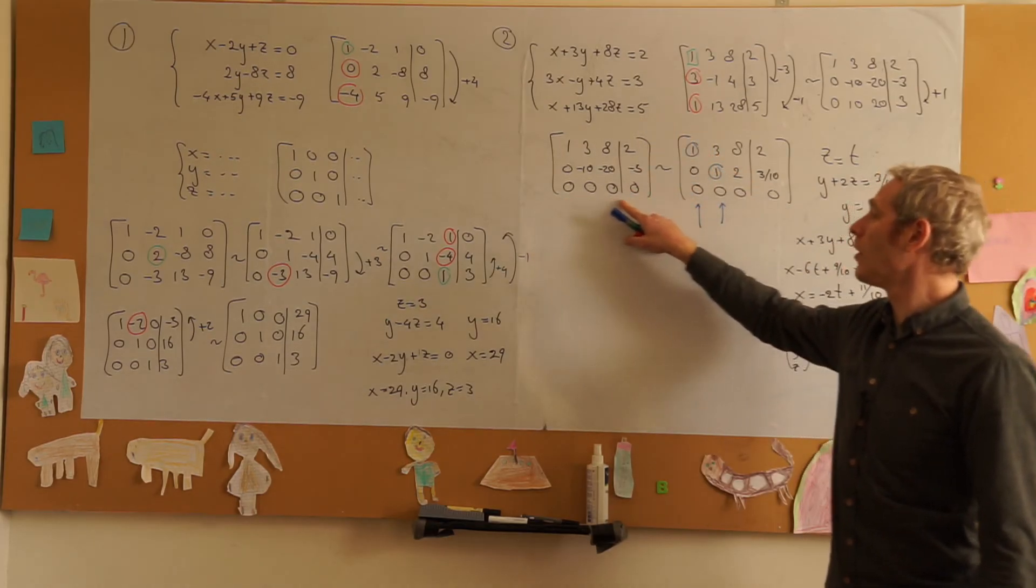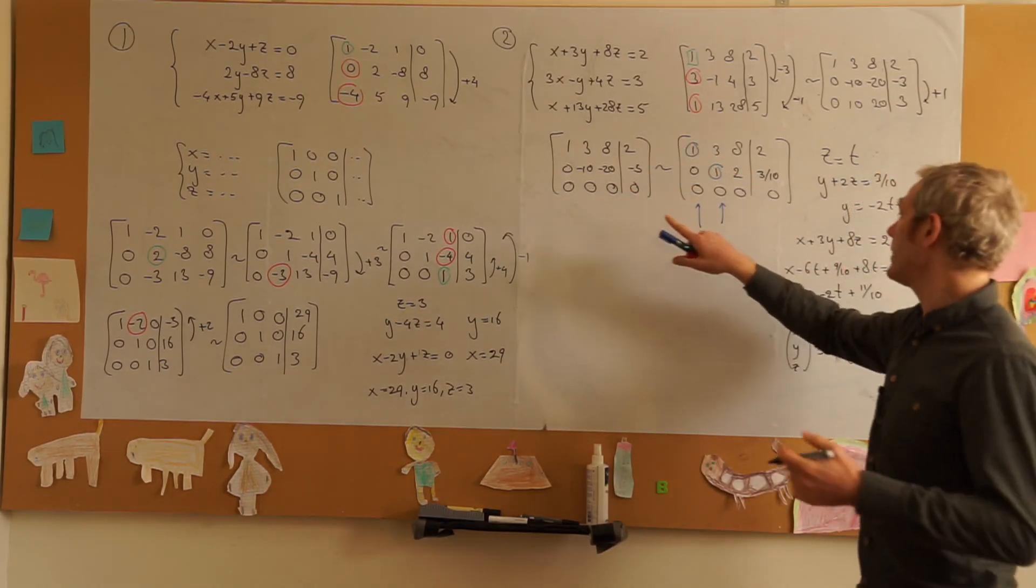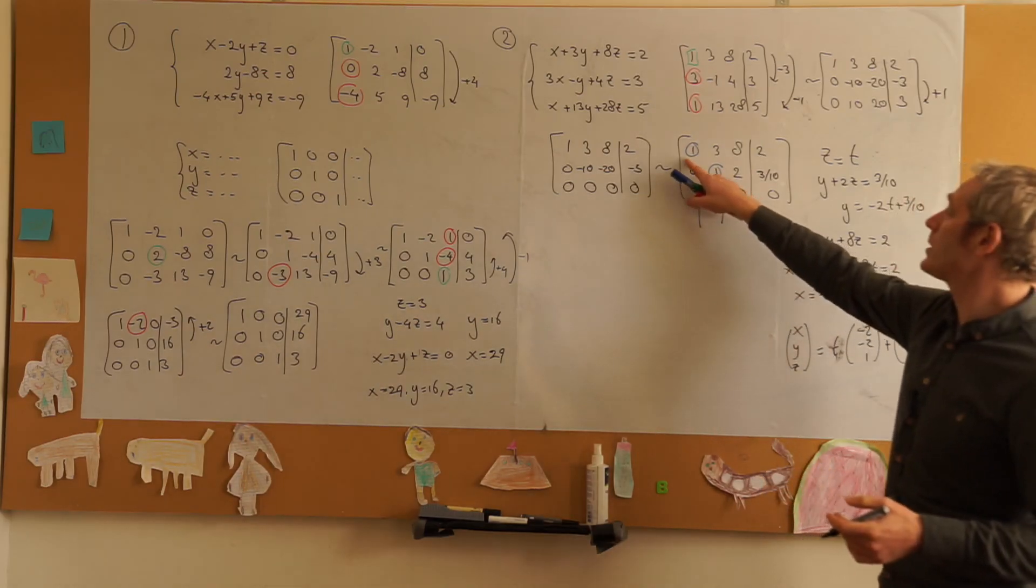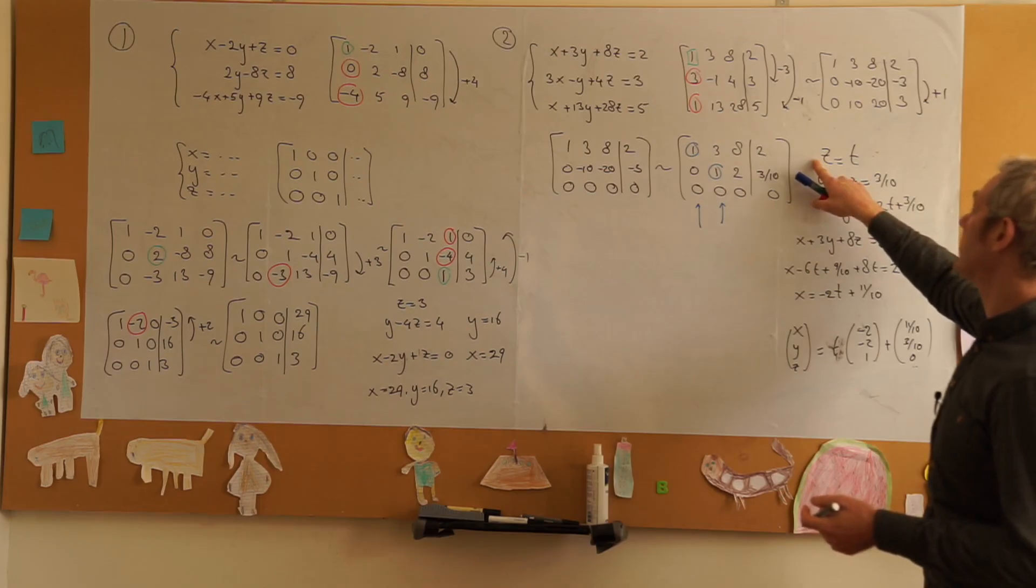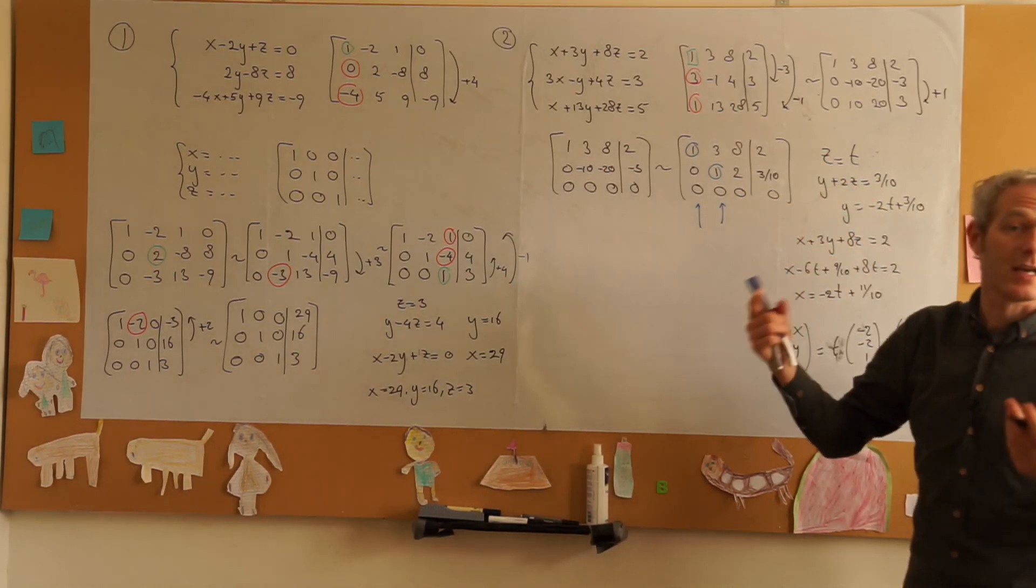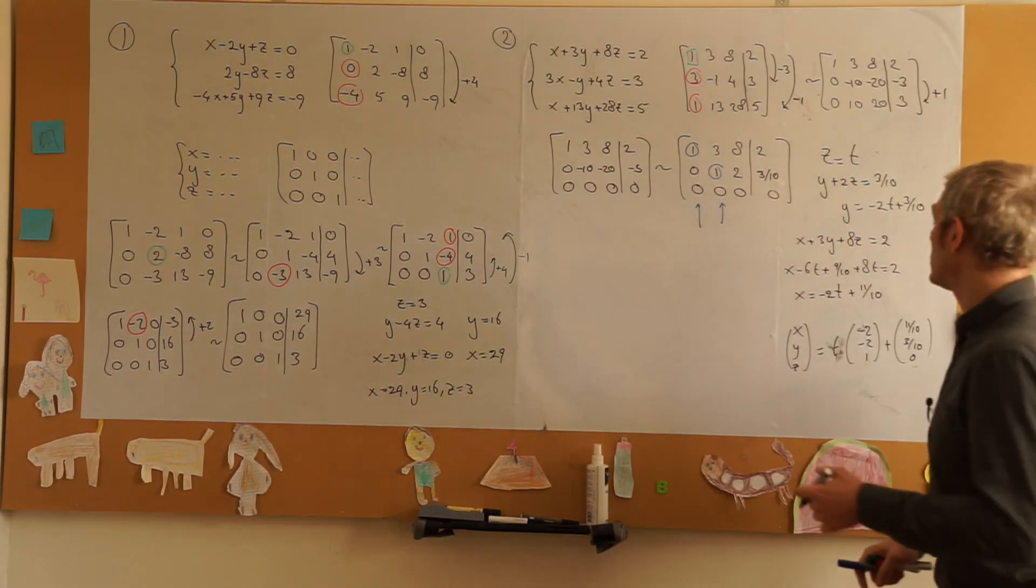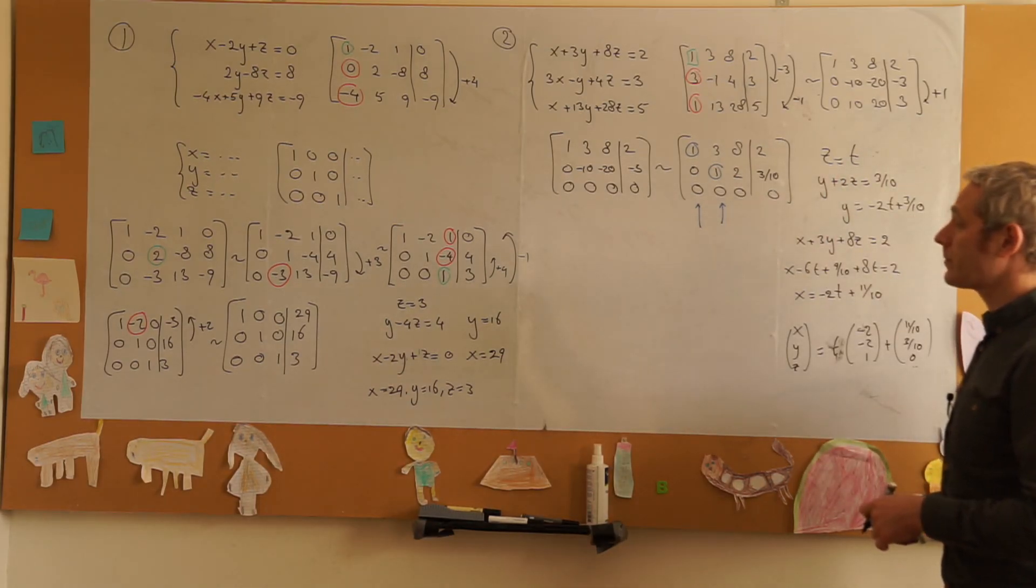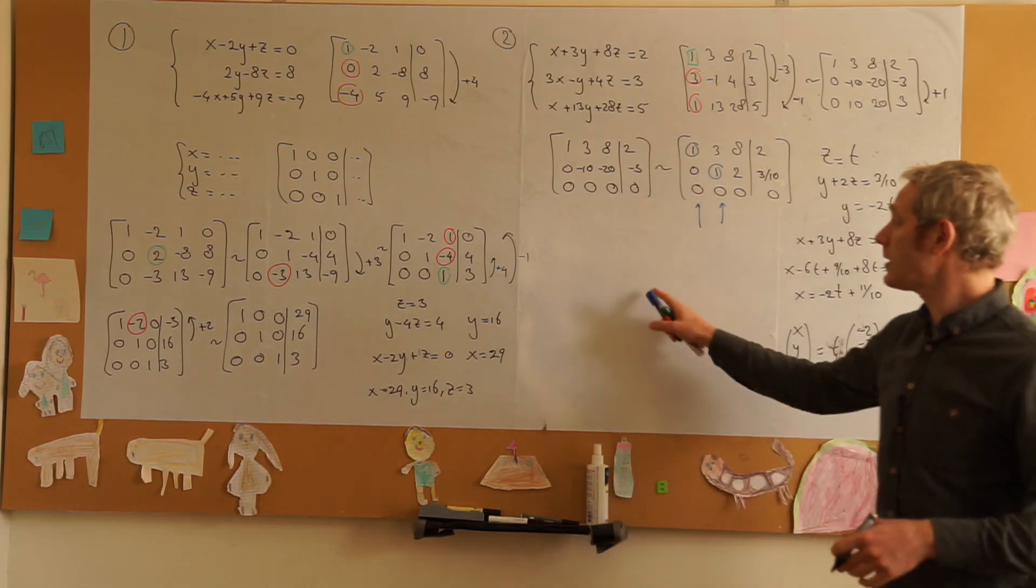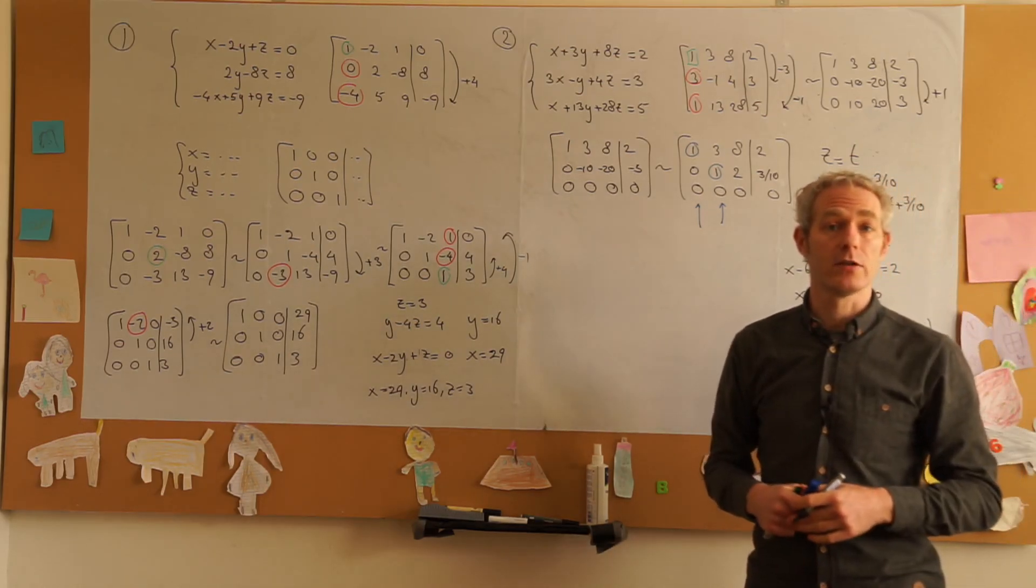So this set of equations we saw very quickly yields a row of zeros so it has infinitely many solutions. I have expressions for x and y but nothing for z so the book writes z is equal to t, a parameter. I just write z is equal to z but we get the same solution here which is a line in 3D space. So the second example has infinitely many solutions.